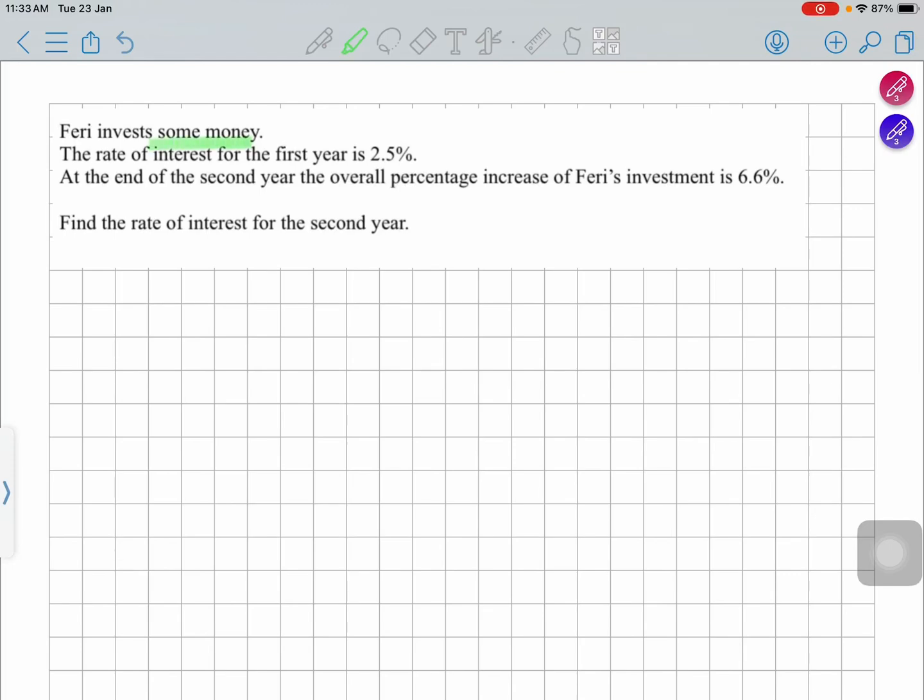Ferry invests some money. The rate of interest for the first year is 2.5%. When you're reading at this point, you might not feel quite confident because you don't have an amount for this money. The question only says some money, so if you want to make your life easy, you can start making an assumption.